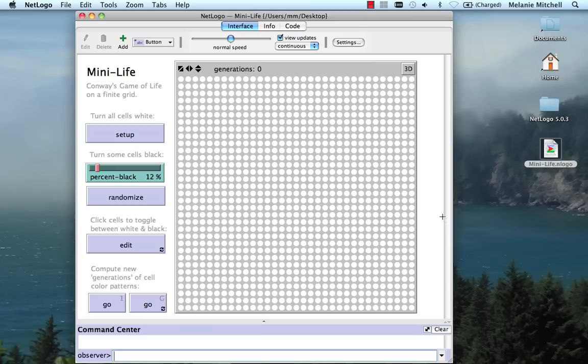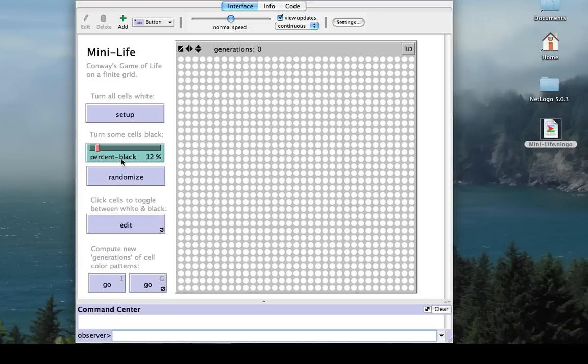We have here this grid of cells where each of these white circles is a cell. The circles can be turned either white or black. So when I click Randomize, it's going to randomly set 12% of them to black.